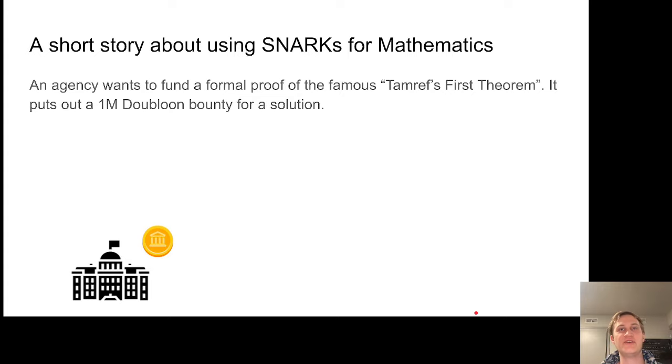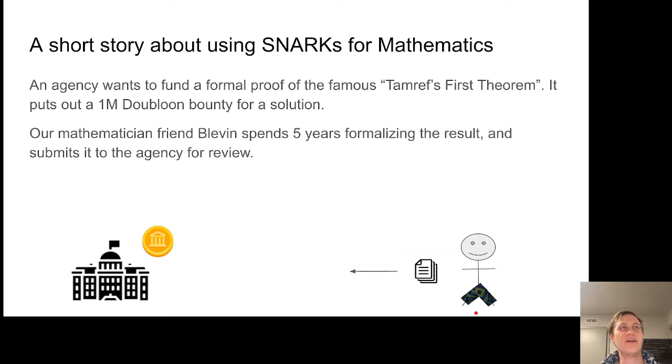Let's say there's an agency that wants to fund the creation of a formal proof for the famous TamRef's First Theorem. It's going to put out a million doubloon bounty for the first person who can create that formal proof. We have a mathematician friend named Blevins who is going to spend five years formalizing the result. Blevins is an expert in TamRef theory, and he's going to want to submit that to the agency for review at the end of five years to get his reward.